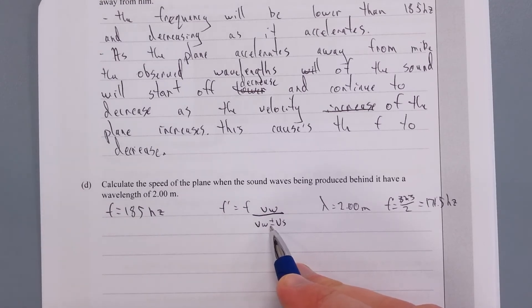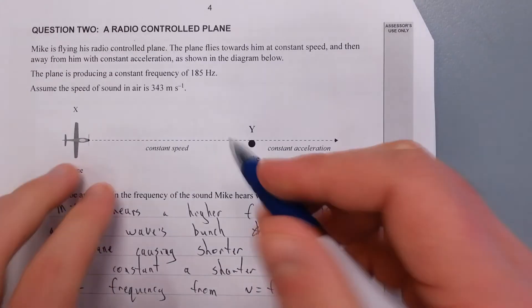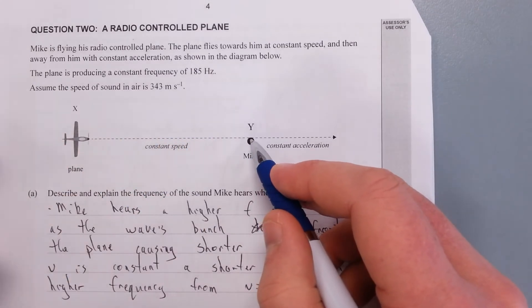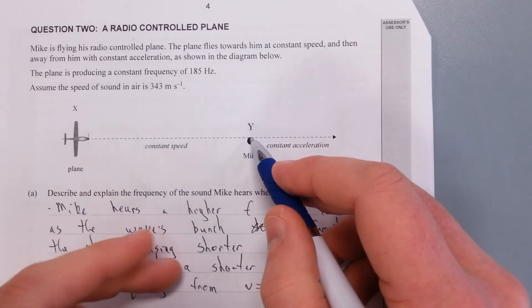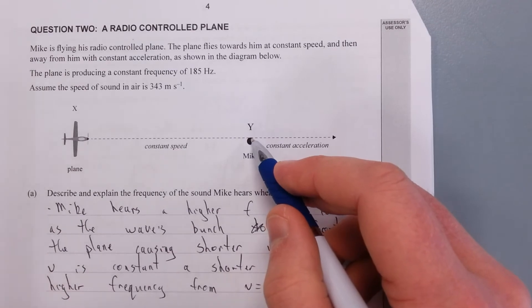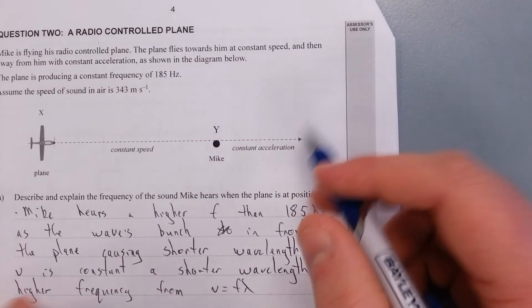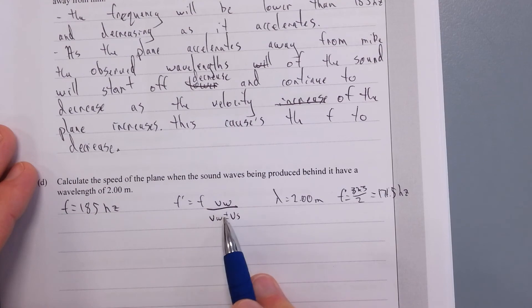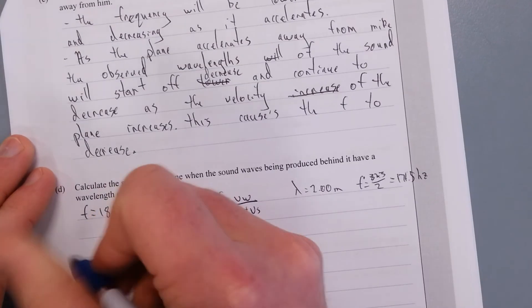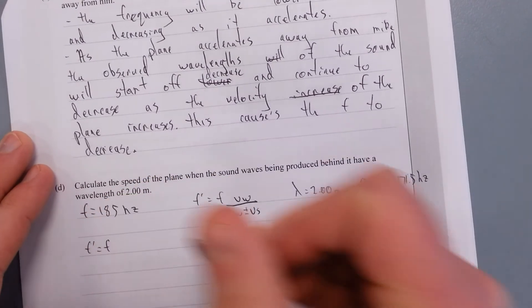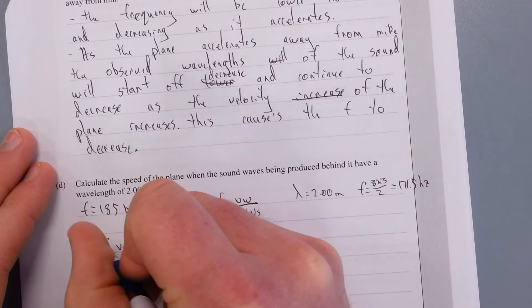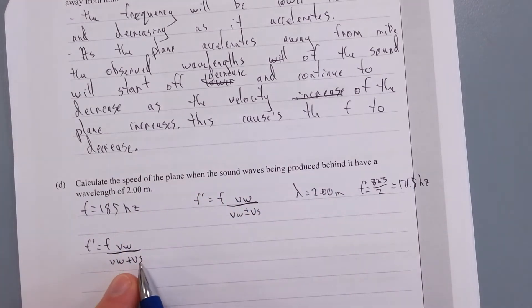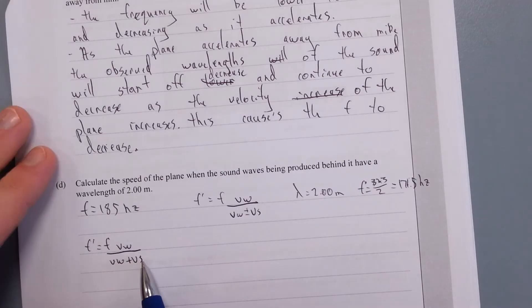We can figure that out just by looking at the math of the question. This number here is F, it's 185, and this number here is F dash, that's 171.5. So this number here is lower than this number here. So in order for that to happen, this fraction, the bottom of the fraction needs to be larger than the top. In other words, the bottom needs to be plus. That's sort of the way to figure it out. You've got to sort of know. So let's just write that. F dash is equal to F times V_W over V_W plus V_S.